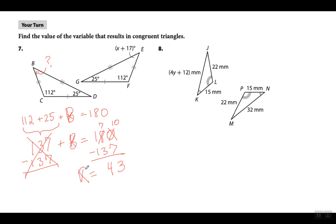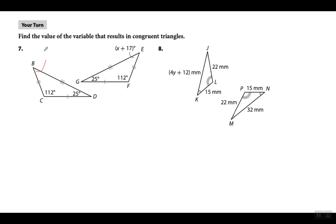Basically the missing angle is 43 degrees. No debía haber usado la x porque lo están usando en el otro lado y eso puede confundir a algunos de ustedes. Debía haber usado otro variable. Pero este ángulo que falta es 43 grados.